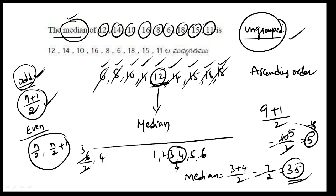Here we choose 1, 2, 3, 4, 5, 6, 7, 8, 9 terms — the number of terms is 9. So 9 plus 1 by 2 equals 10 by 2, which is the 5th term. The middle term is the 5th term. The numbers given are 6, 8, 10, 12, 15.